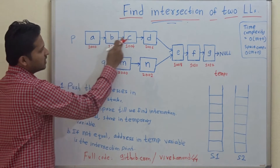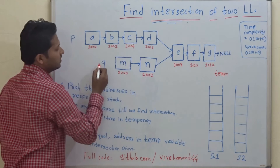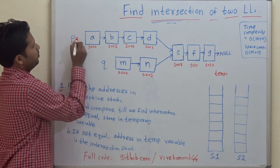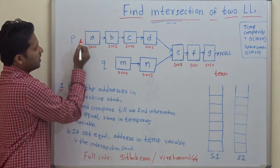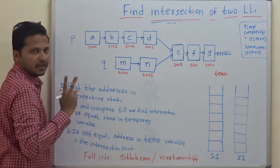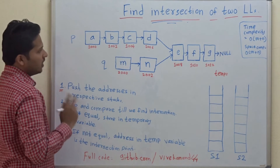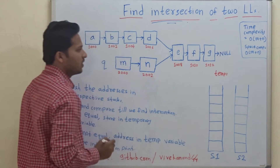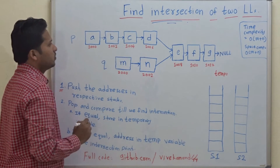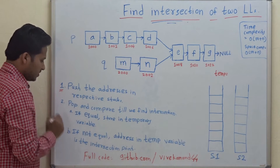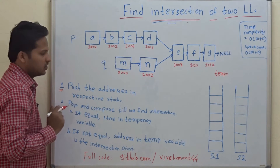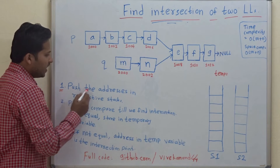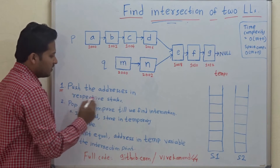So this is the first linked list and this is the second linked list. P is the head of the first linked list and Q is the head of the second linked list. In this approach we are going to use a stack and follow these steps to find out the intersection. The first step says: push the addresses into their respective stacks.